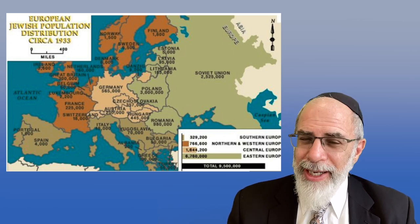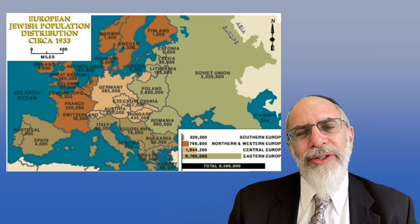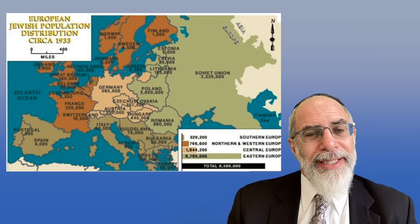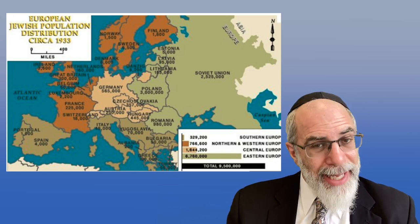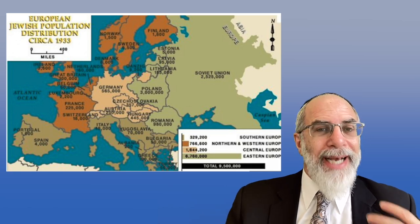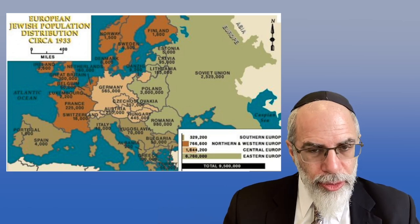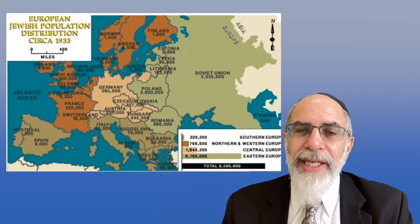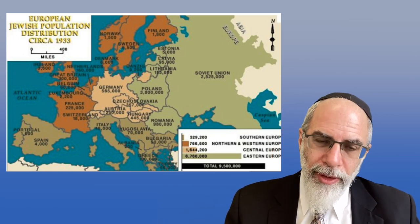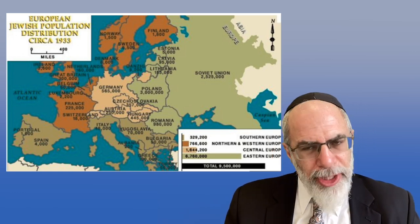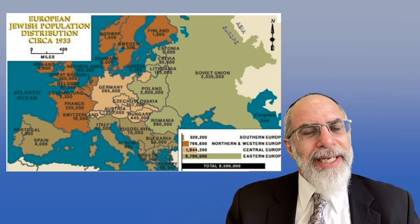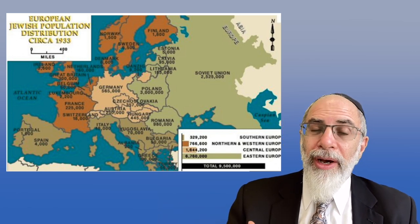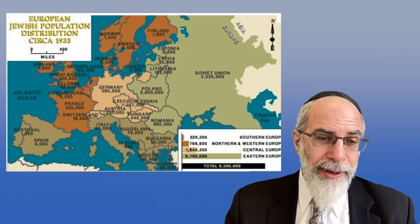German Jews tend to be highly assimilated — they speak German well, dress like Germans, and have less outward adherence to traditional Jewish observance. Whereas when you move to the east, there are large masses of traditional Hasidic and Lithuanian Jews who are much more obviously Jewish from the outside.